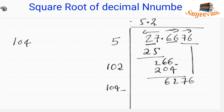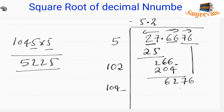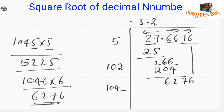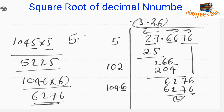Trying digit 5: 1045×5=5225 — less than 6276. Trying digit 6: 1046×6=6276 — exactly equal. So we choose 6 and write it here. 6276 minus 6276 equals 0. Therefore the square root of 27.6676 is exactly 5.26.